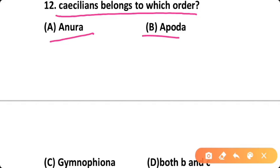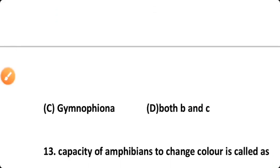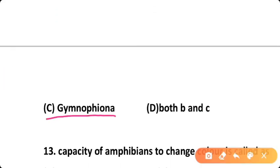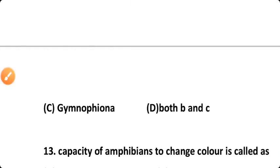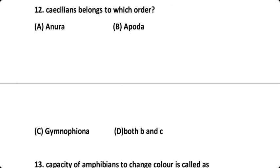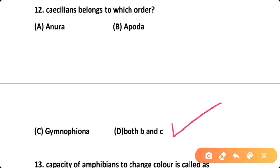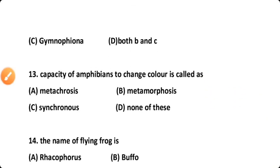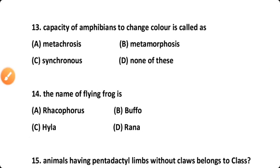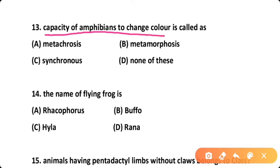Question twelve: The correct answer is Option D — both Apoda and Gymnofiona are the same order, and caecilians belong to order Gymnofiona; they are limbless. Question thirteen: The capacity of amphibians to change their color is called — Option A: metachrosis, Option B: metamorphosis, Option C: synchronous, Option D: none of these.